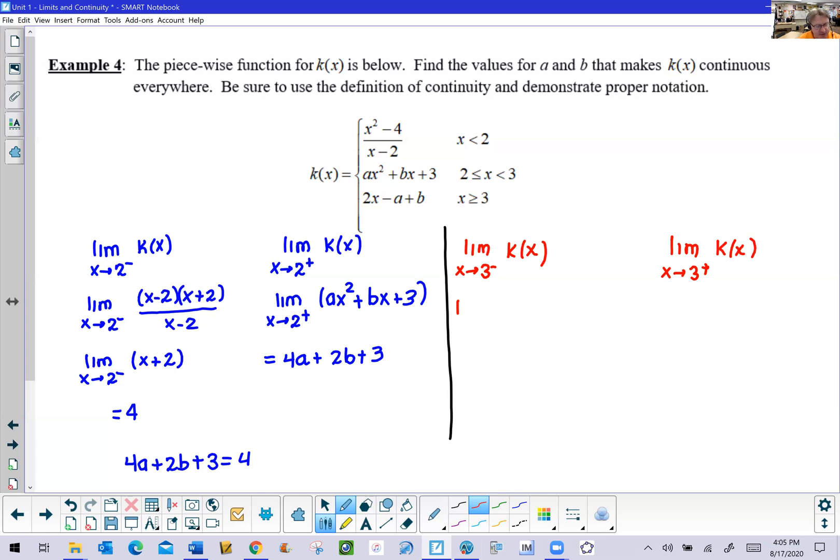Well from the left side, once again it seems like we've been here before. We're going to use that middle piece because to the left of 3 is when x is less than 3. So we have a very similar situation from before. Now the only difference is we're going to replace the x with 3, and upon doing that we would get 9 times a plus 3 times b plus 3.